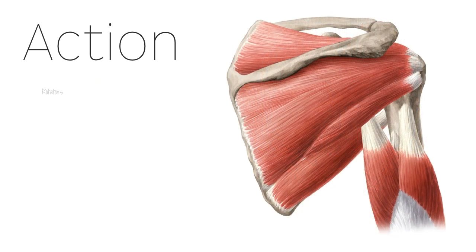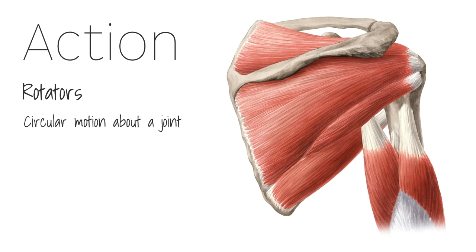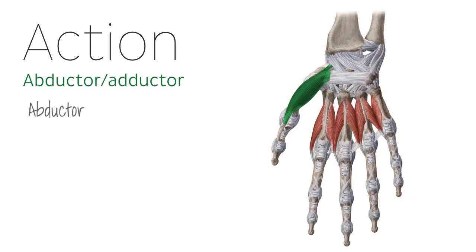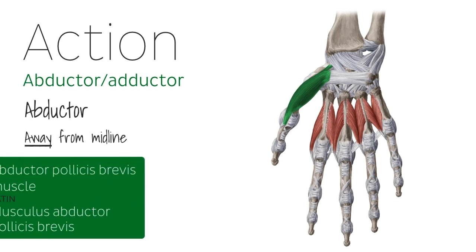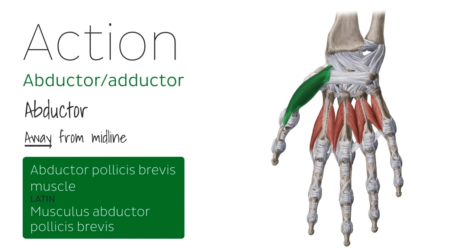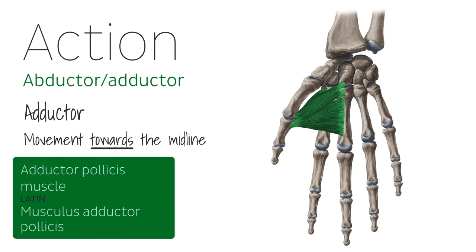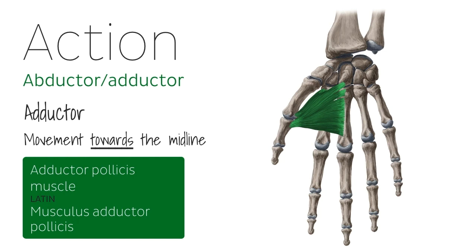Moving on to the rotators: as the name suggests, these are muscles that facilitate the rotation of a limb or circular motion about a joint. For example, the muscles of the rotator cuff, which although individually these muscles do not have the word rotator in their names, they are called the rotator cuff muscles because this is the action they collectively carry out. The abductor muscles facilitate abduction, which is the movement of a limb away from the midline. The abductor pollicis brevis muscle, for example, abducts the thumb. Adductor muscles facilitate movement towards the midline, as is the case with the adductor pollicis muscle, which adducts the thumb.